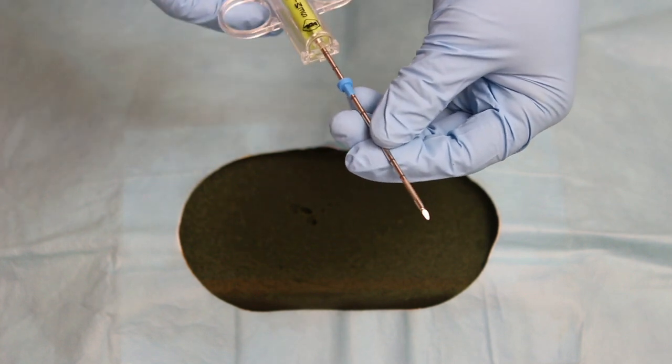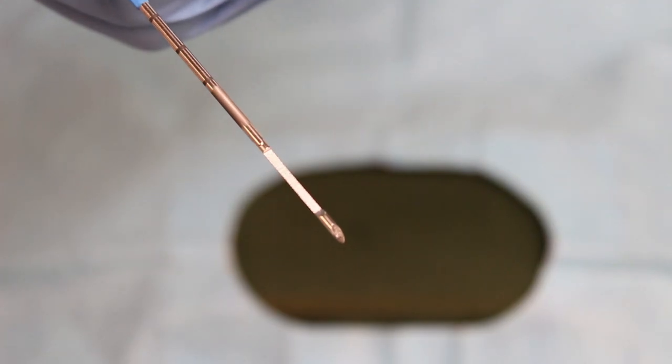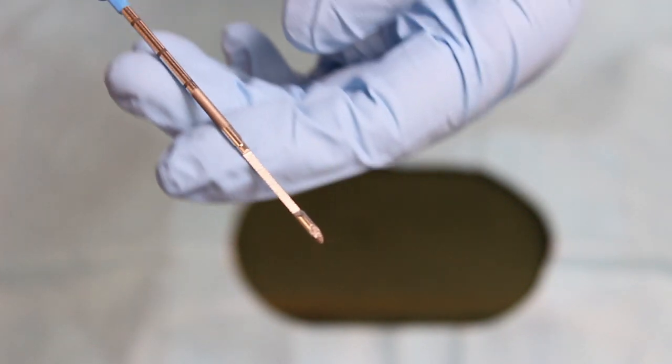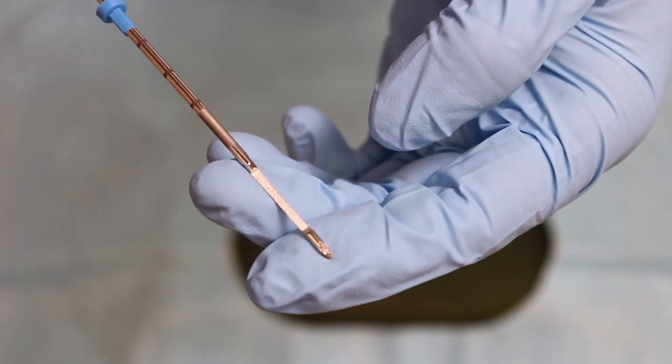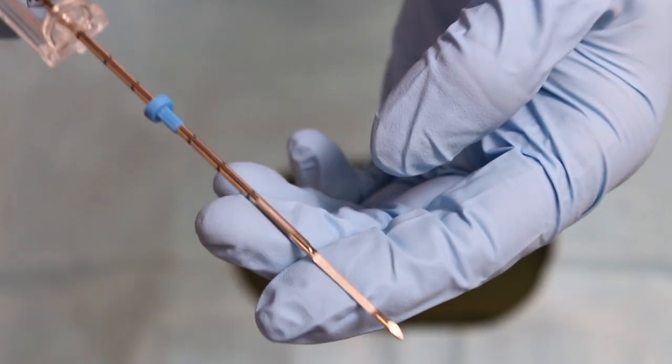The distal part of the cannula is treated to be visible under ultrasound equipment. The stylet has a 16-degree bioptic tip and is equipped with a 19.5mm notch for specimen collection.